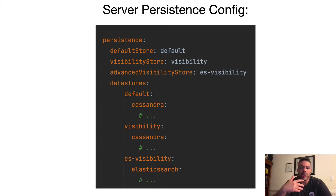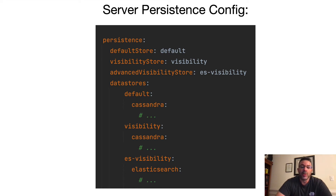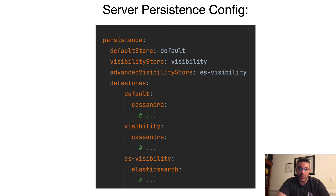Via dynamic config you can also configure where the advanced or visibility data should be stored — in the visibility store that you define, in advanced visibility if you define it via config, or via dynamic config you can store your visibility data to both places as well. The reason I bring this up is that Temporal is not meant to be the primary data storage, even though we have defined our persistence.